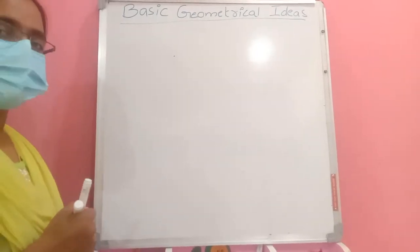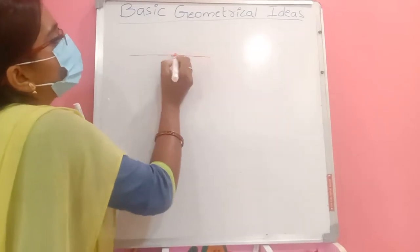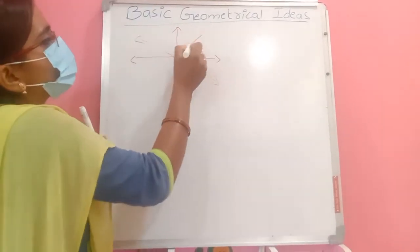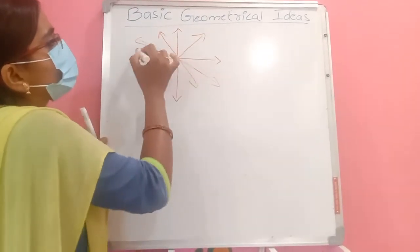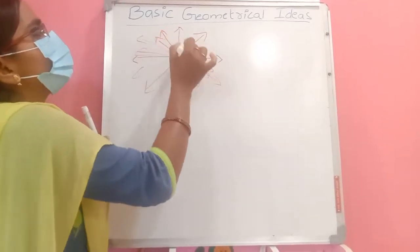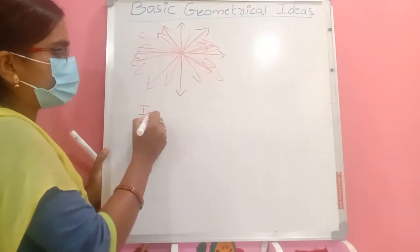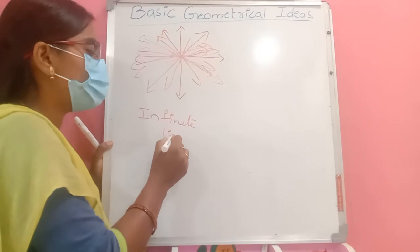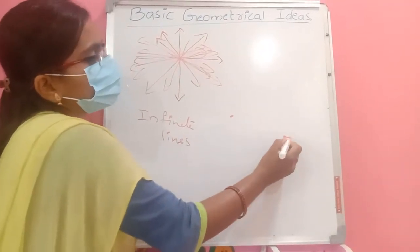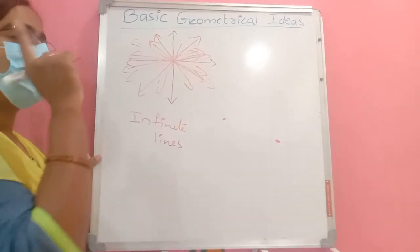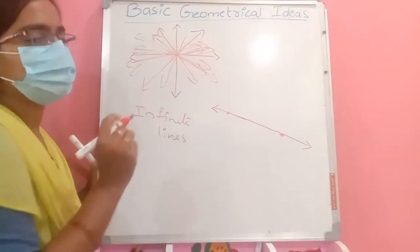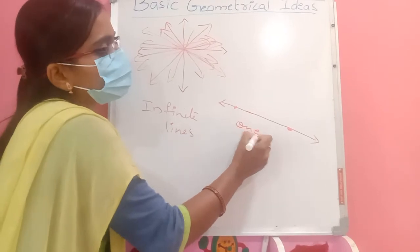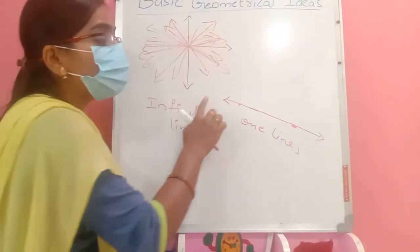Here is an important question: if you have a point, how many lines can be drawn through it? Through one point we can draw infinite lines — a second line, a third, fourth, fifth, and so on. But through two points, we can draw only one line, because that line must pass through both points.